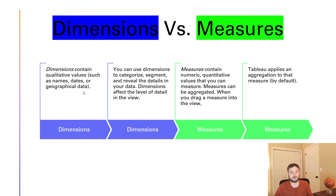Dimensions are qualitative, so they cut your data, like dates or geographies. You can use dimensions to categorize your data and it changes the level of detail on your view in Tableau.